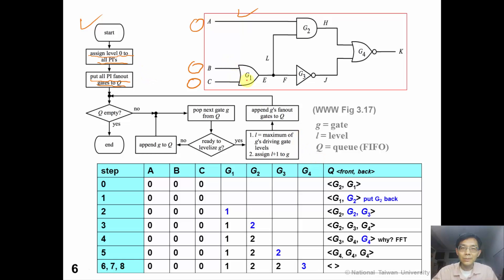In this circuit, the fanout gates of primary input are gates G1 and G2. We put them in the queue, where on the left hand side is the front of the queue, and the right hand side is the back of the queue. Every time we pop out a gate from the queue. Now in this example, it's G2.